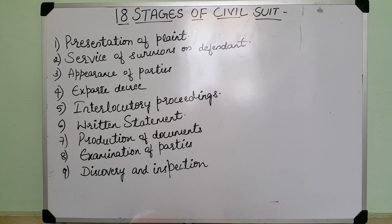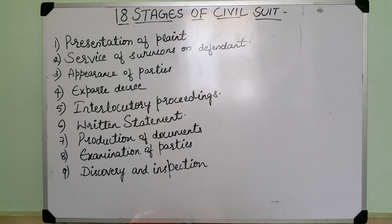The first point is presentation of plaint. The second one is service of summons on defendant. The third one is appearance of parties. The fourth one is ex parte decree. The fifth one is interlocutory proceedings. The sixth one is written statement. And the seventh is production of documents.